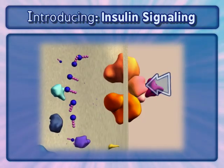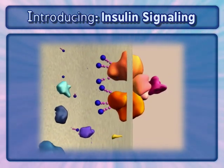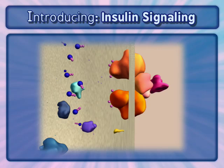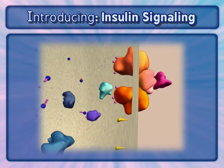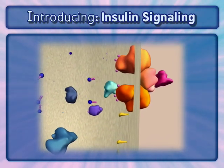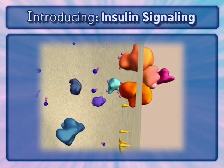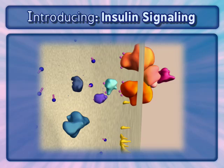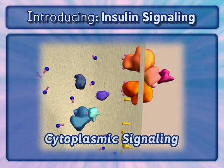Here, we will illustrate the signaling pathway that occurs when glucose is at high levels. This pathway involves multiple proteins and signaling events, and is termed cytoplasmic signaling. Different types of cells perform similar signaling steps in response to changes in their environment.